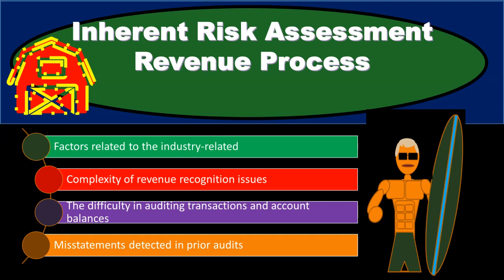The inherent risk is something the auditor doesn't have direct control over. The business has some control over it by putting in types of internal controls and by choosing what type of business they are in. Different types of industries will have different types of inherent risk, so the business has chosen its inherent risk to some degree by choosing the type of industry they are involved in, and then they can mitigate that inherent risk through internal controls.